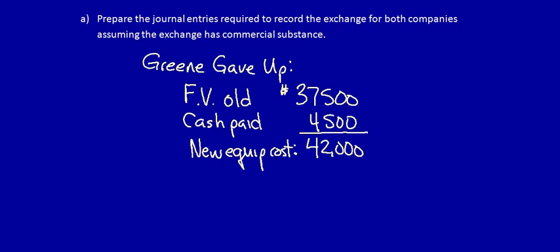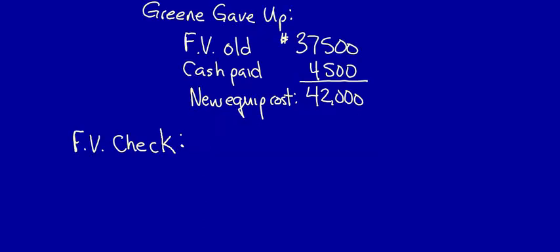What do we have to do next? A fair value check. When an asset is acquired, it can't be recognized at more than the fair value of the asset received. So we're calculating the fair value of the asset given up and that's what we're going to use in order to record the fair value of the asset received. However, this asset has its own fair value. When an asset is acquired, it can't be recognized at more than its own fair value — the fair value of the asset received. Therefore, when an exchange is recorded, there must be a fair value check, and it has to be completed every single time.